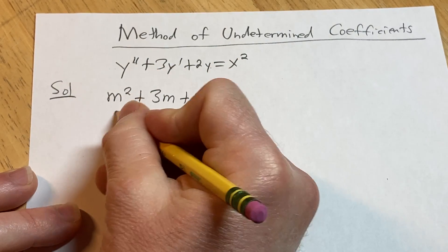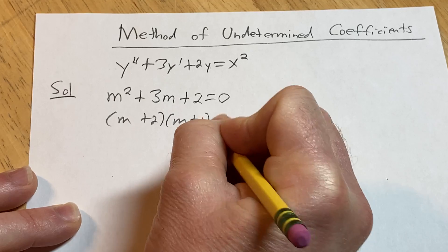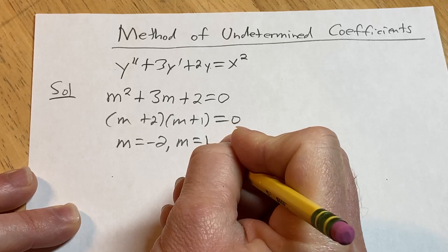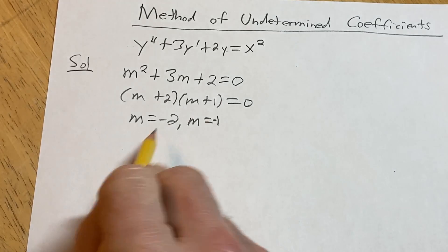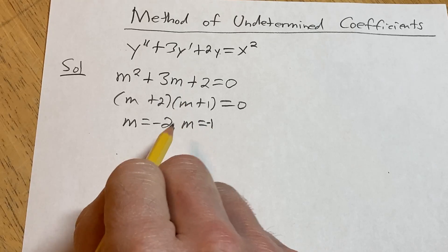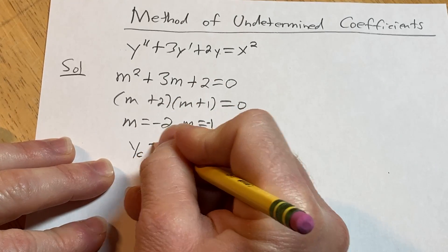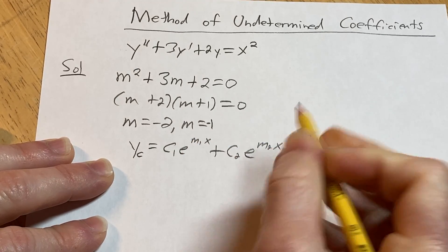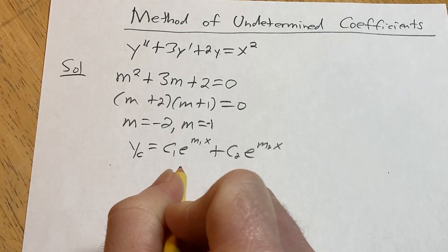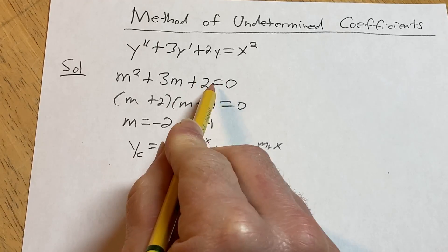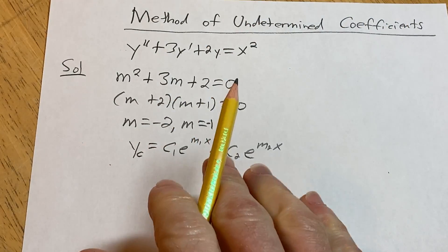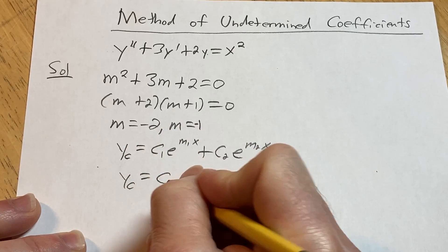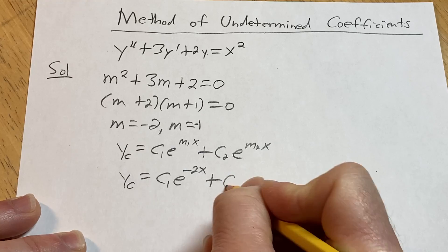You can factor this as (m plus 2)(m plus 1). Setting each factor equal to zero gives roots m equals negative 2 and m equals negative 1. Whenever you have distinct real roots, your complementary function looks like y sub c equals c1 e to the m1 x plus c2 e to the m2 x. So here, y sub c equals c1 e to the negative 2x plus c2 e to the negative x.